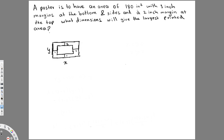They give us that the total area of the poster is xy = 180 square inches. That's our first equation. Now we need another equation for the printed area. The inside dimensions are x minus 2 (one inch on each side) and y minus 3 (two inches on top, one inch on bottom), so printed area A = (x − 2)(y − 3).